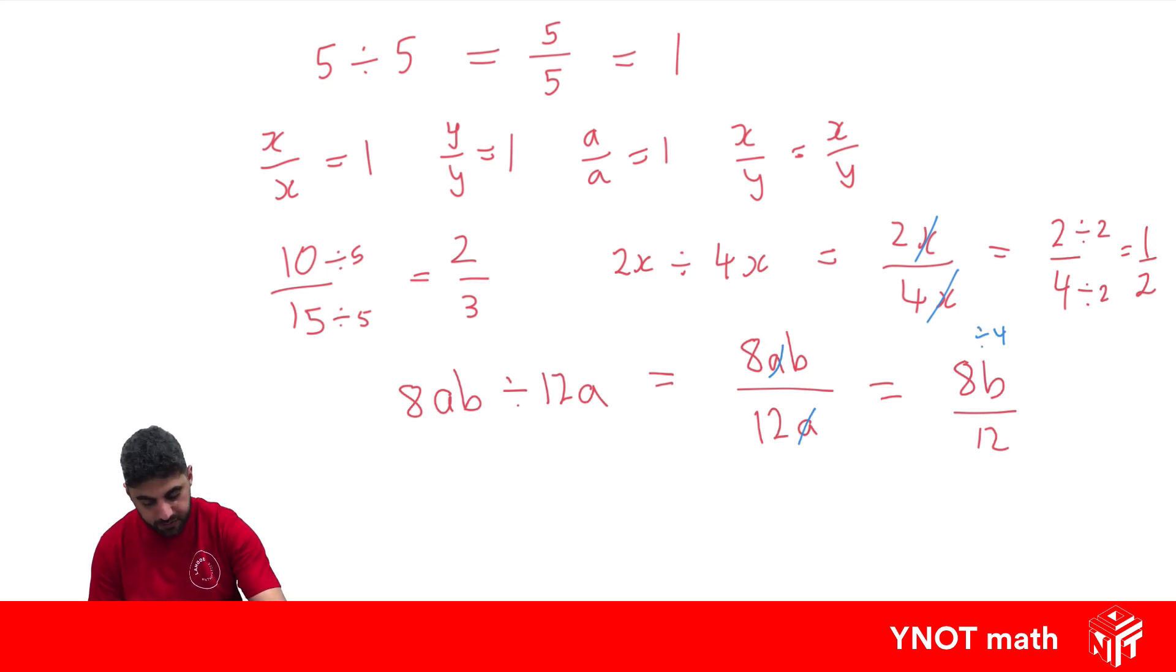They're both divisible by 4. So 8 divided by 4 is 2, so we still got the b. And 12 divided by 4 is 3, and that's our final answer. So 8ab divided by 12ab is 2b over 3.